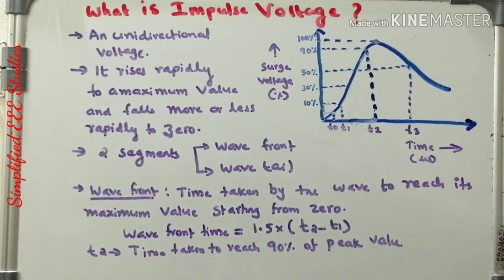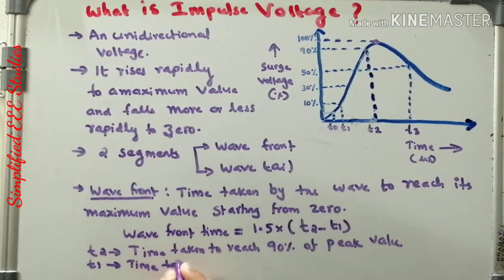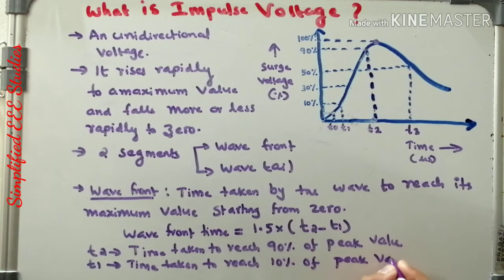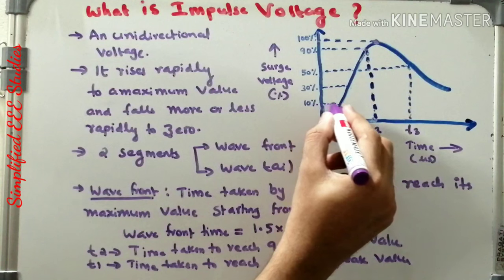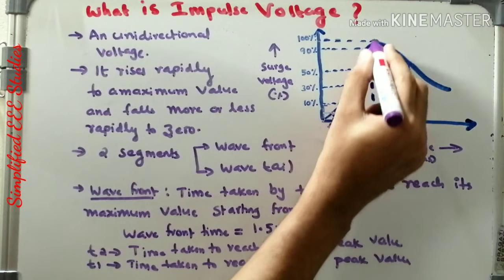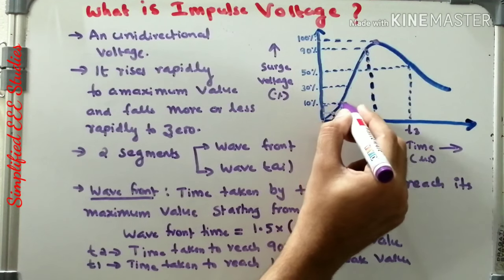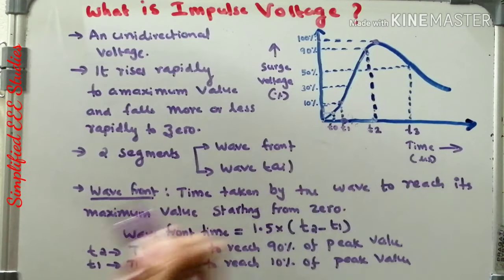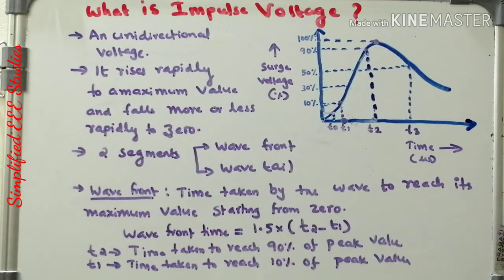Similarly I can define T1. T1 means the time taken to reach 10% of the peak value. Look at the diagram — 10% of peak value is point C, that is T1. So 1.5 should be multiplied with the difference of T2 and T1, then you will be getting the wavefront time.